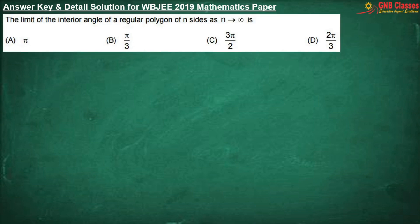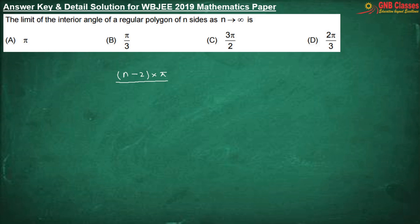The limit of the interior angle of a regular polygon of n sides as n tends to infinity. The sum of all angles of an n-sided regular polygon is (n − 2)π. So each interior angle is (n−2)π/n = (1 − 2/n)π.